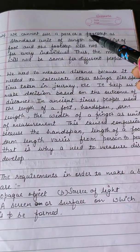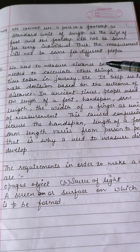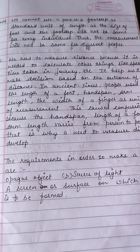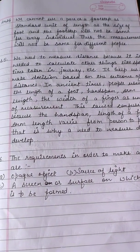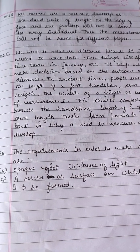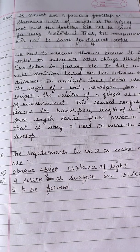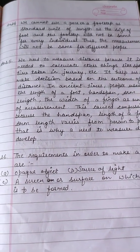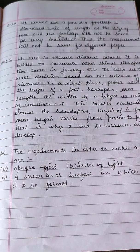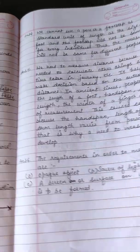Why can a pace or footstep not be used as a standard unit of length? We cannot use a pace or footstep as a standard unit because the size of the foot and footstep is not the same for every individual. Different people have different foot sizes, arm lengths, and finger widths, so the measurement will vary from person to person.